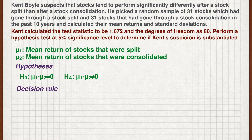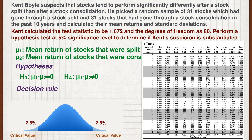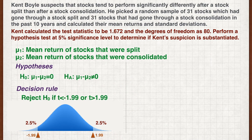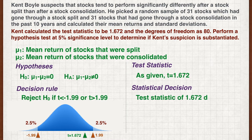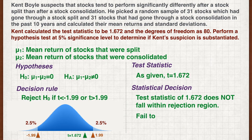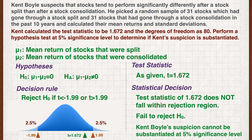Next, let's state the decision rule. Looking at the t-table where degrees of freedom equals 80 and the two-tail cumulative probability equals 0.05, we get the critical values plus and minus 1.99. The decision rule is: reject H0 if t is less than minus 1.99 or if t is greater than 1.99. Given the test statistic of 1.672, it does not fall within the rejection regions. We therefore fail to reject H0, and Kent's suspicion cannot be substantiated at the 5% level of significance.